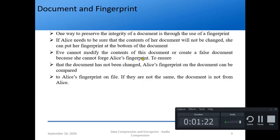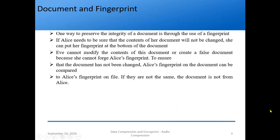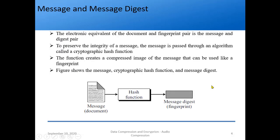We then studied document and fingerprint. If Alice needs to be sure the contents of a document will not be changed, she can put a fingerprint at the bottom. Since it is Alice's fingerprint, no one can change it because it is unique — you cannot modify the contents. To ensure the document has not been changed, Alice's fingerprint on the document can be compared to Alice's fingerprint on a saved file. From this concept we generate message and message digest. If I apply a hash function to a message, what I get at the output is the message digest — which is nothing but the fingerprint.